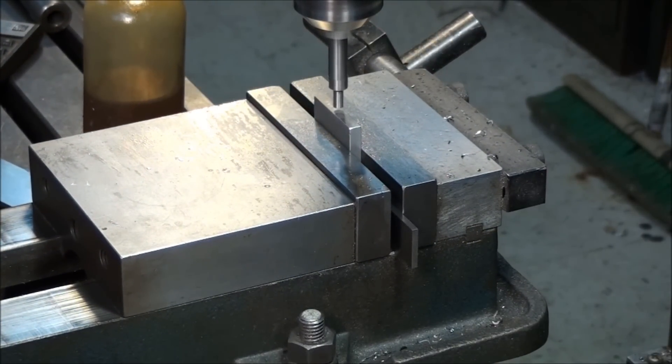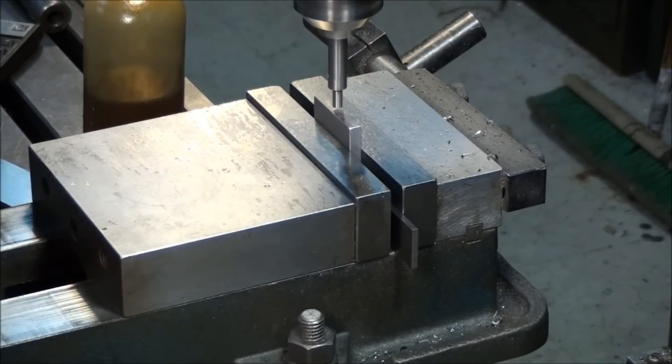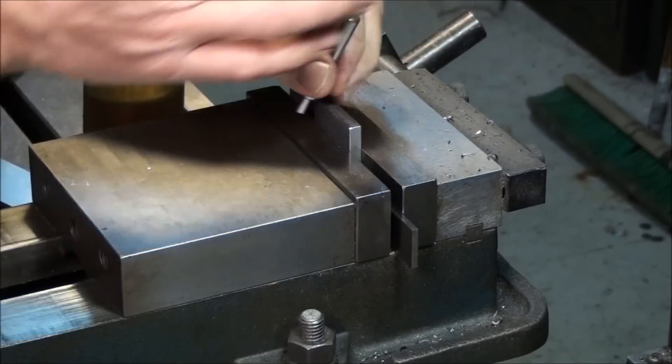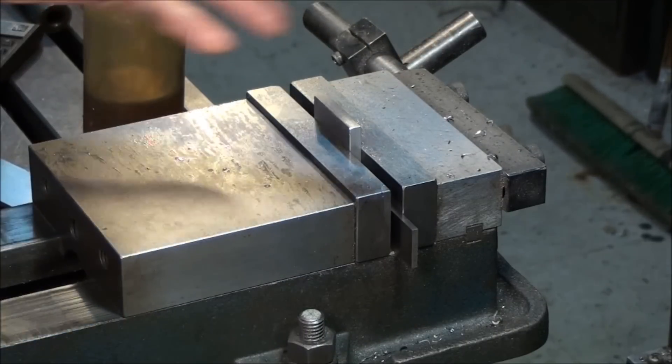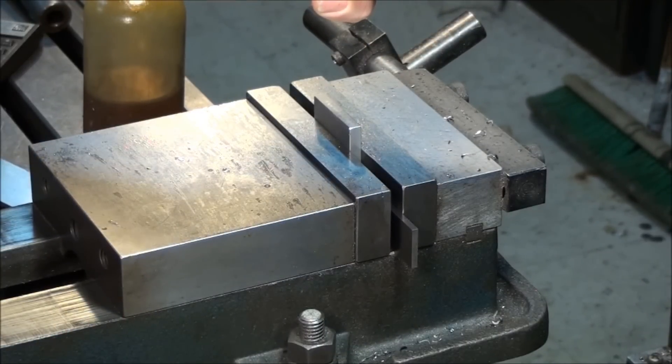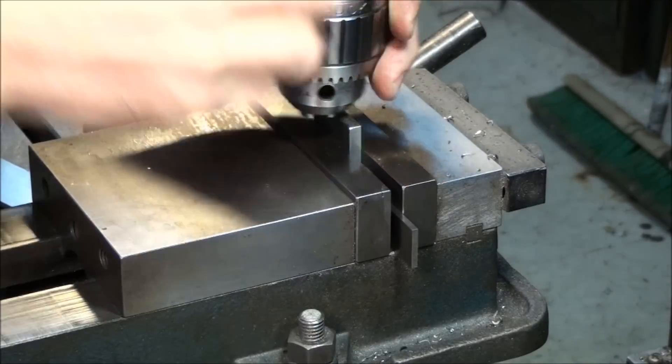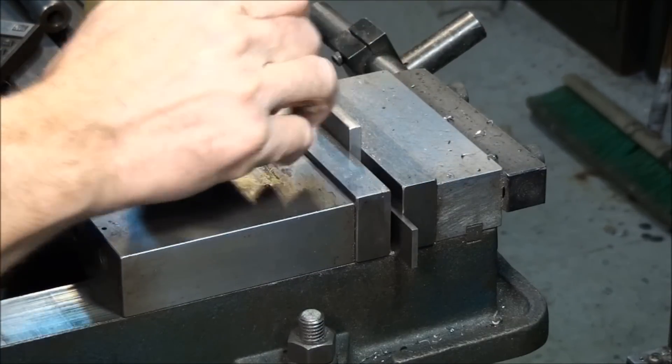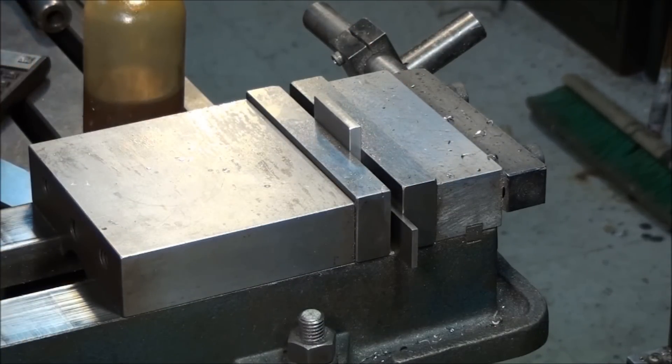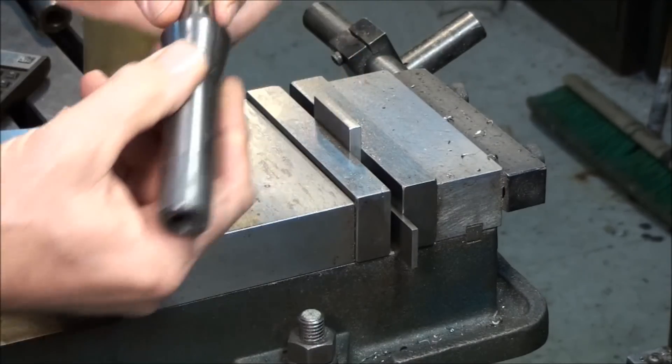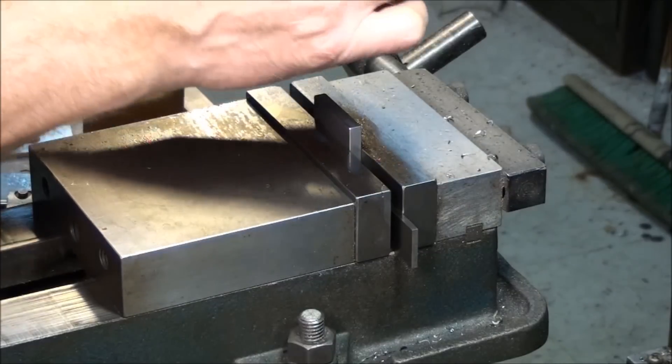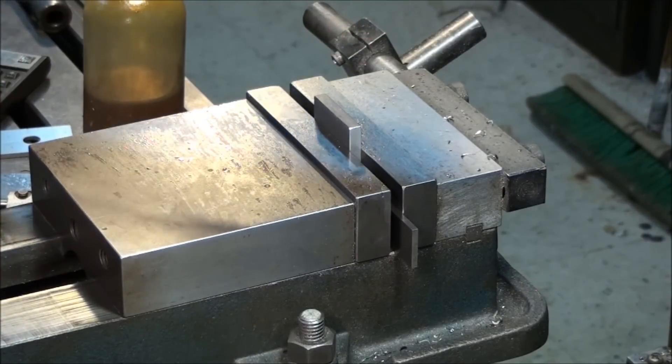So we've got 0.8125 right there. Zero out the readout and let's go ahead and throw a cutter in here. We've got a 5/8 end mill. We'll use that to mill the 7/8.